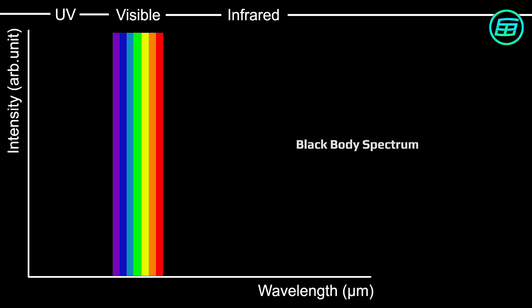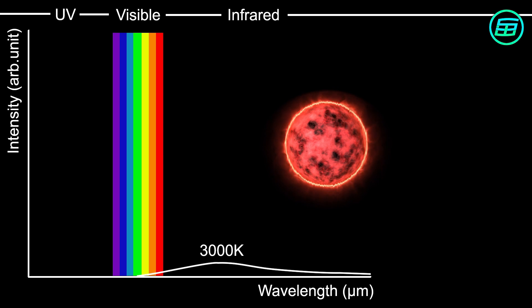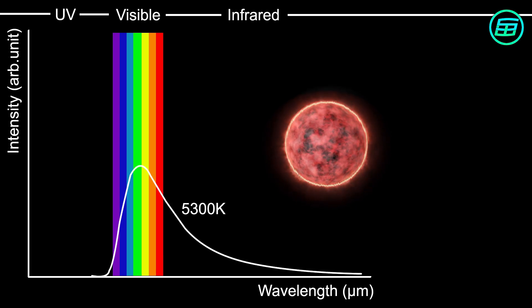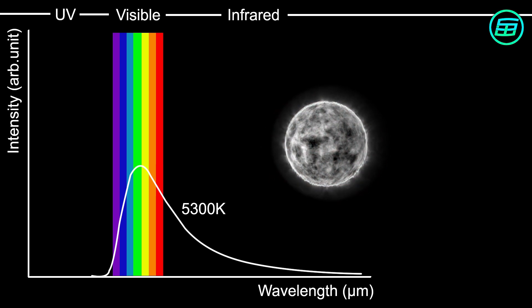If a star's surface temperature is about 3000 Kelvin it appears red, because it emits mainly radiation in the red part of the spectrum. If a star's surface temperature is 5300 Kelvin, about 5000 degrees Celsius, it appears white.